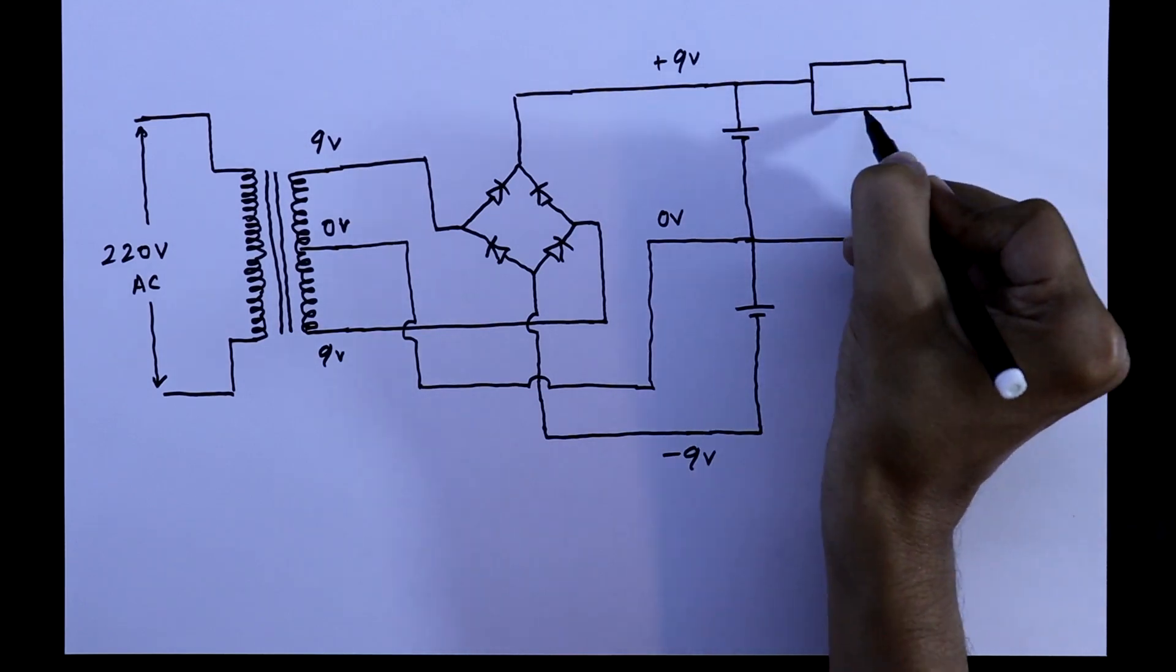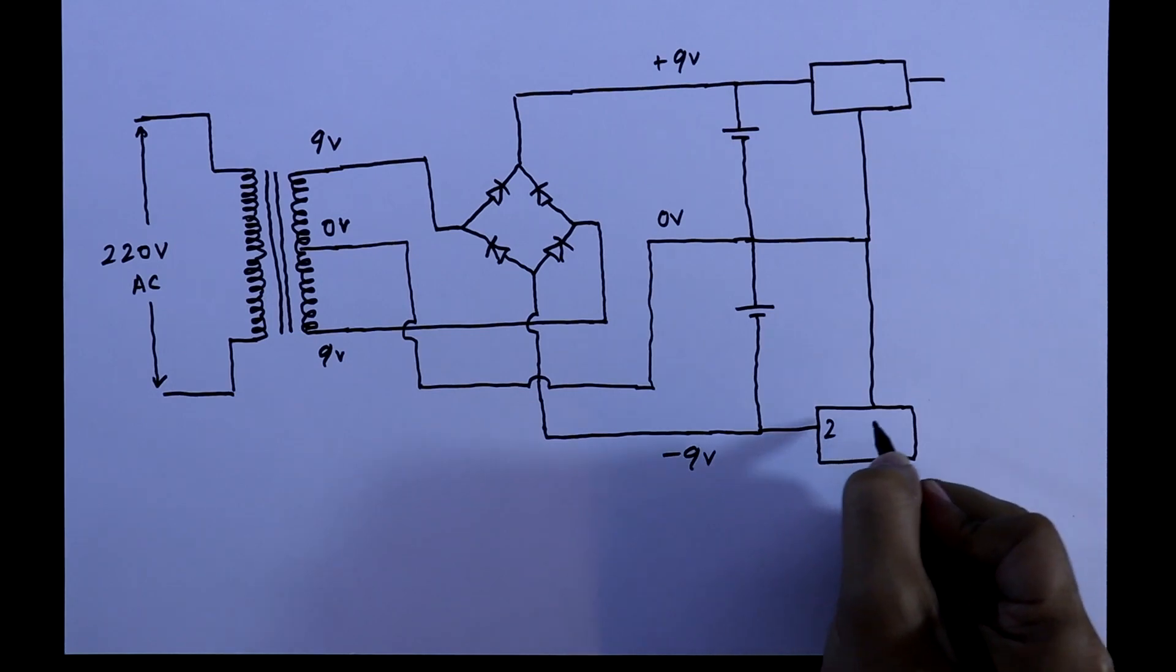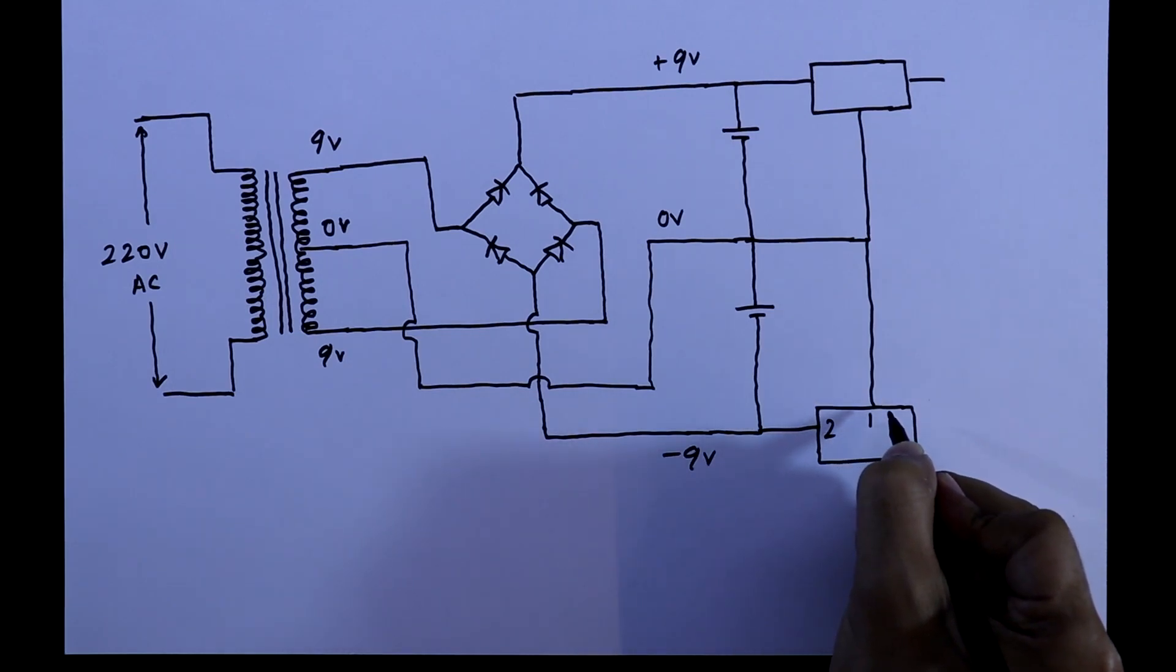Now we have to connect the regulator IC. This will be the input pin, that is pin 2. The common pin or the ground is connected.